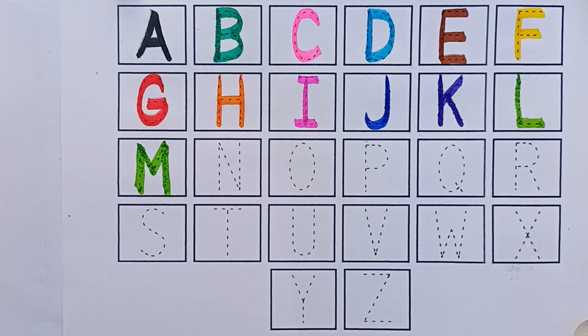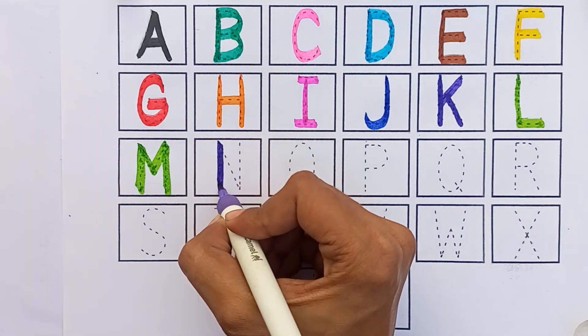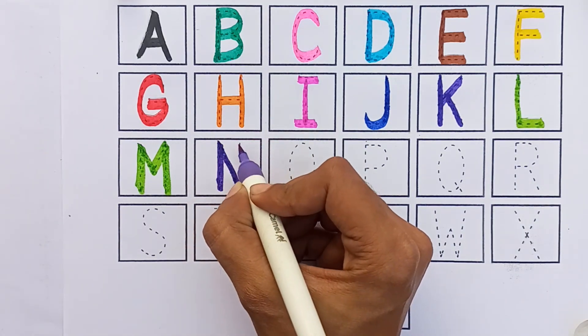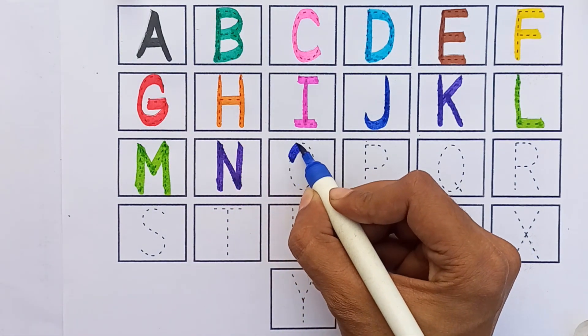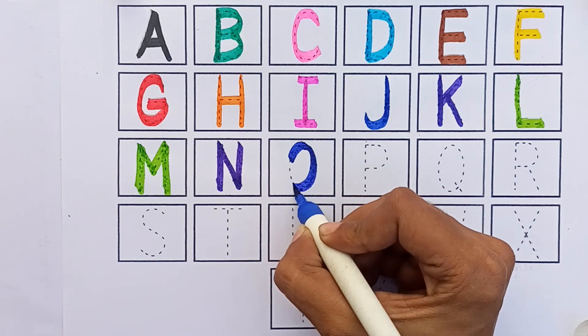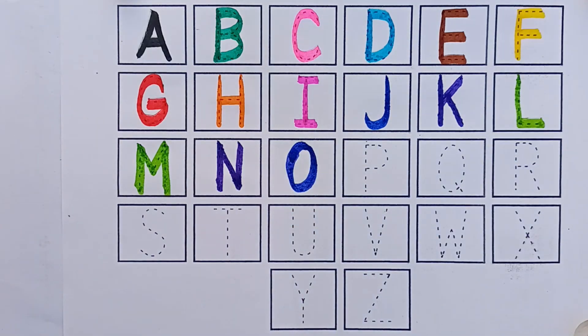M. M for Mango. N. N for Net. O. O for Owl.